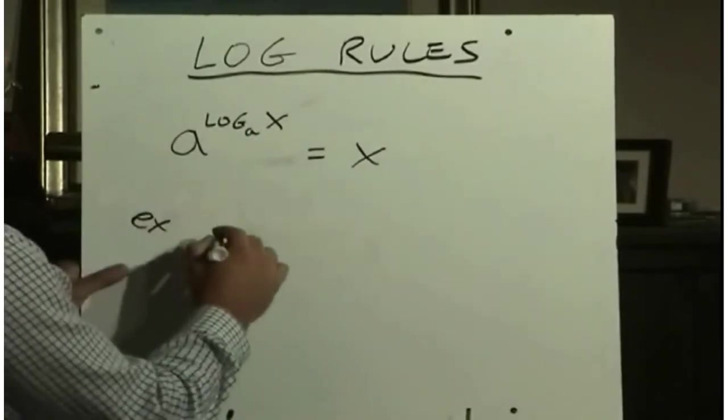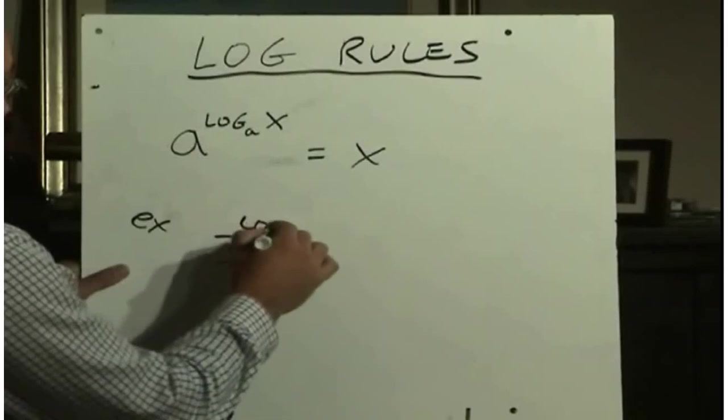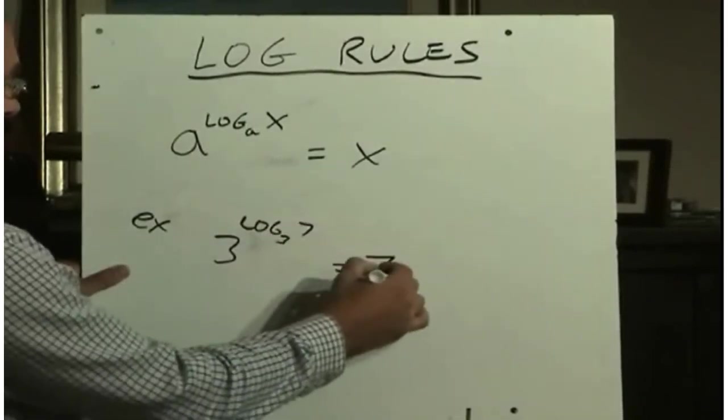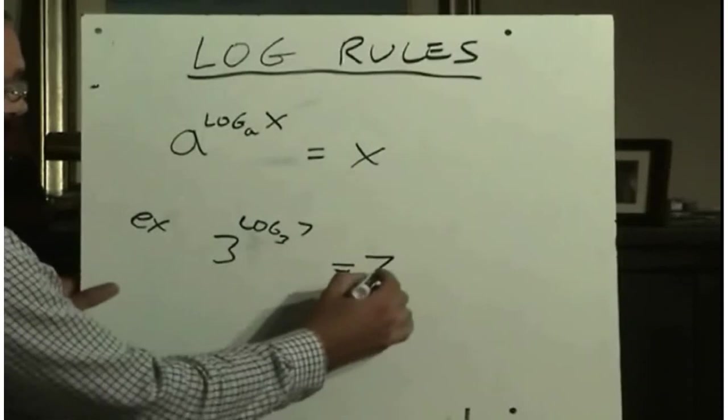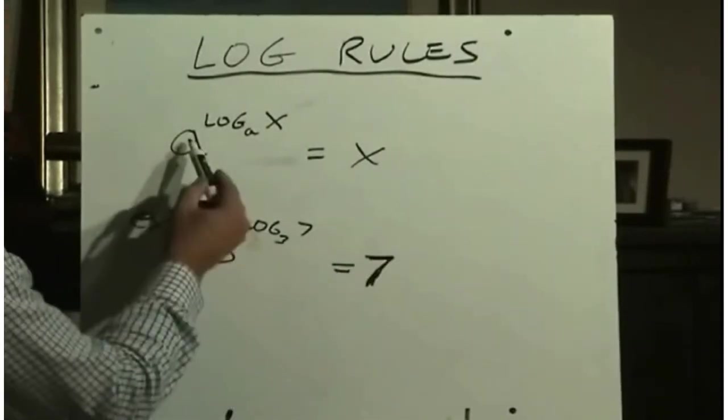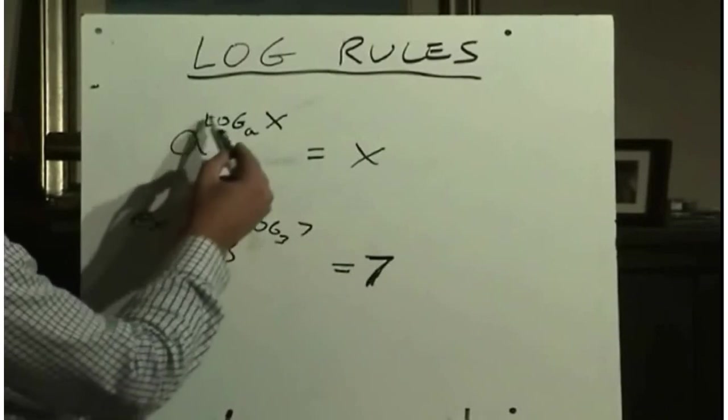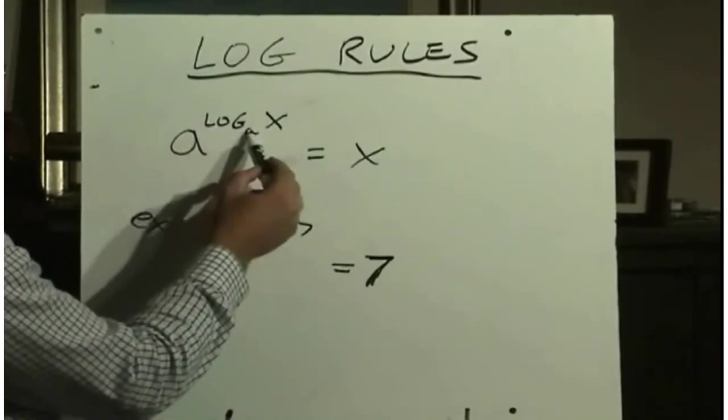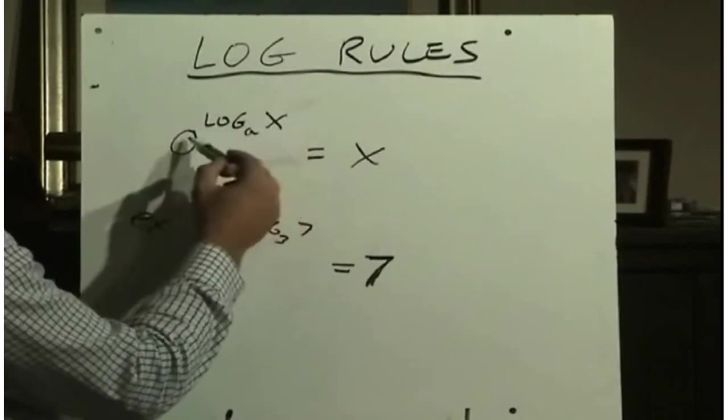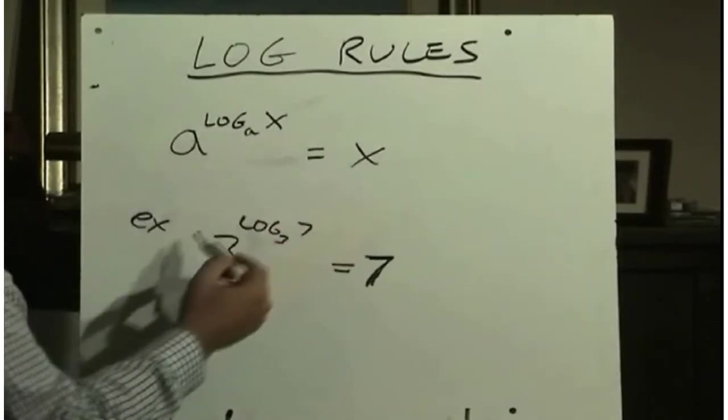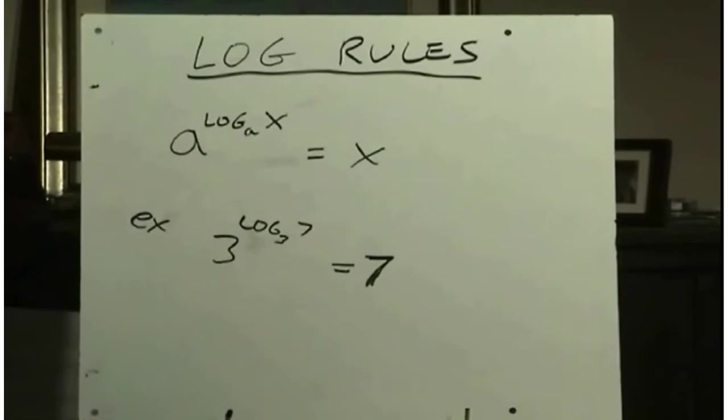So as an example, if we had 3 to the power of log base 3 of 7, then that will simply be equal to 7. So a very straightforward one. If you see a base, and this base is raised to a power, and in the exponent there's a logarithm, which has the same base, then you can just say that this will be equal to x. Or in this example, this would equal 7.